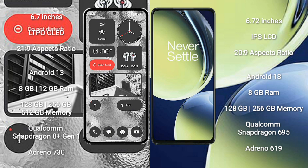Nothing Phone 2 comes with 8GB or 12GB RAM and 128GB, 256GB, or 512GB internal storage. It is powered by the Qualcomm Snapdragon 8 Gen 1 processor with Adreno 730 GPU.